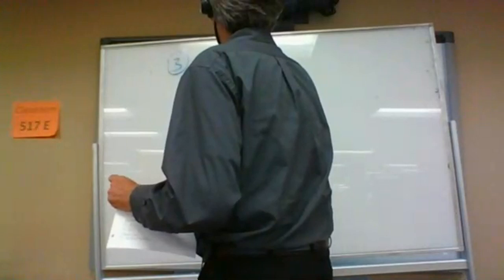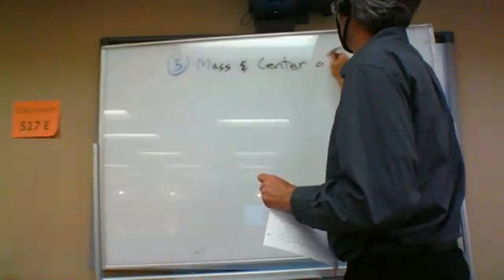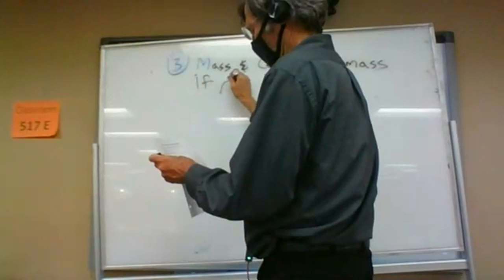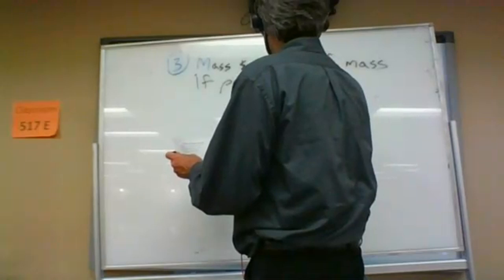Number three asks you to find the mass and center of mass of the half disk. The density function rho of x, y is two grams per square centimeter.